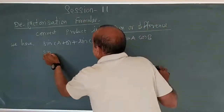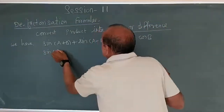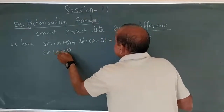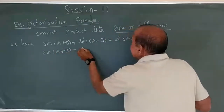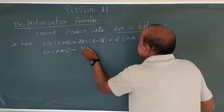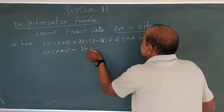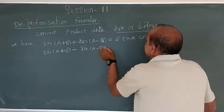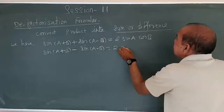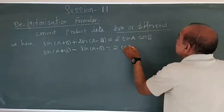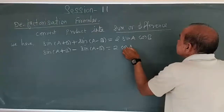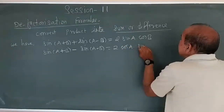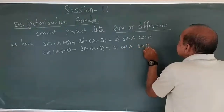Similarly, sin A plus B minus sin A minus B equals 2 times cos A into sin B. That is the second formula.